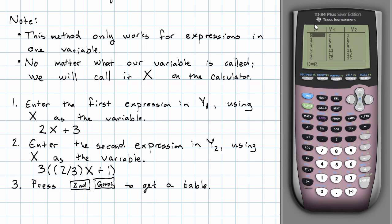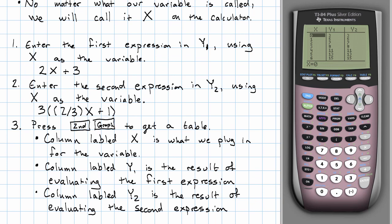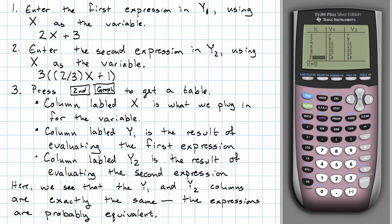So this column labeled X is what we're plugging in for the variable. And then the column labeled Y1 is what we get by evaluating the first expression. Notice, I can use the up and down arrows to scroll through different values of X. And I see that the Y1 column and the Y2 column are exactly the same wherever I look.